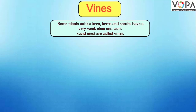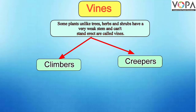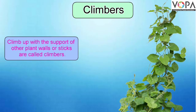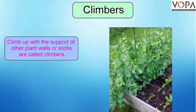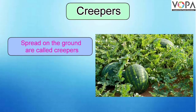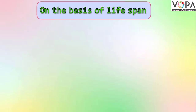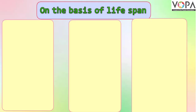Vines: Some plants, unlike trees, herbs, and shrubs, have a very weak stem and cannot stand erect — these plants are called vines. Vines are of two types: creepers and climbers. Climbers: Plants with a weak stem that climb up with the support of other plants, walls, or sticks are called climbers. For example: money plant, pea plant, bean plant, etc. Plants with weak stems that spread on the ground are called creepers. For example: watermelon plant, pumpkin plant, etc.